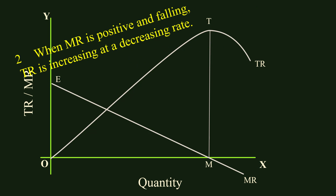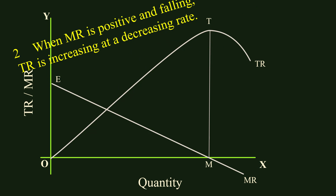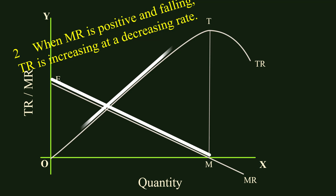Second relation: when MR is positive and falling, total revenue is increasing at a decreasing rate. In the segment EM of the MR curve, MR is positive and falling. So in the segment OT, total revenue is increasing at a decreasing rate.